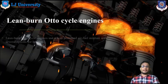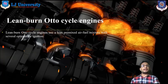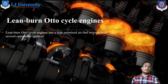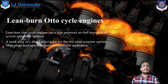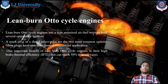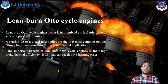Let us move on further and consider lean-burn auto-cycle engines. Lean-burn auto-cycle engines use a lean pre-mixed air-fuel mixture with several options for ignition — the mixture means air and fuel mixed before entering the combustion chambers — with the help of spark plug or diesel micropilot systems for ignition purpose. One of the most important benefits of lean-burn auto-cycle engines is their high brake efficiency, which can reach up to 50% in many cases.